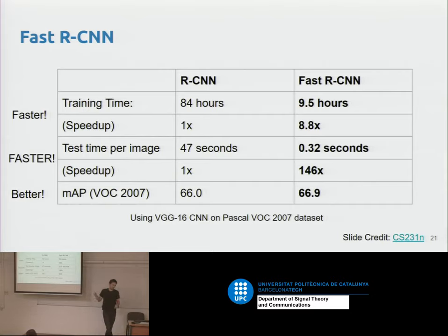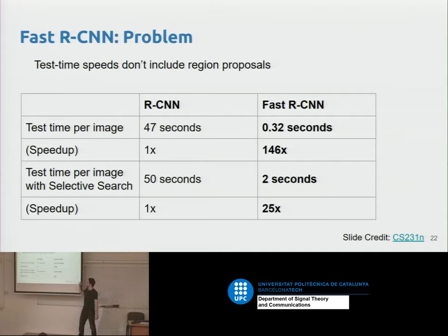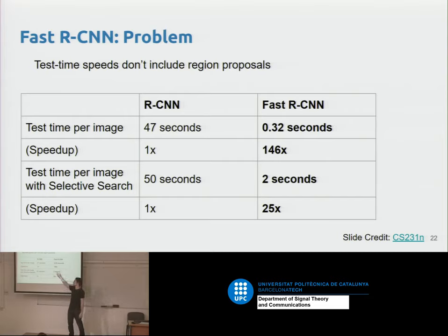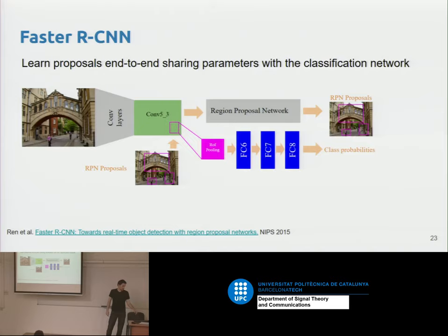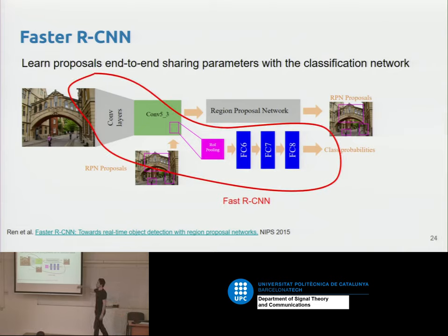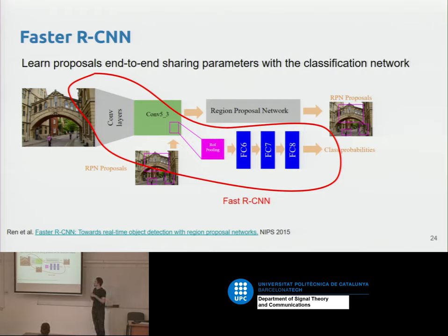But Fast RCNN still relied on an external algorithm to generate object proposals. Previously at 47 seconds it didn't matter much, but going from 0.32 to 2 seconds matters a lot. To solve this they proposed Faster RCNN, which includes a Region Proposal Network — a network inside the network that proposes regions using a deep learning architecture, making the whole pipeline end-to-end trainable and faster.